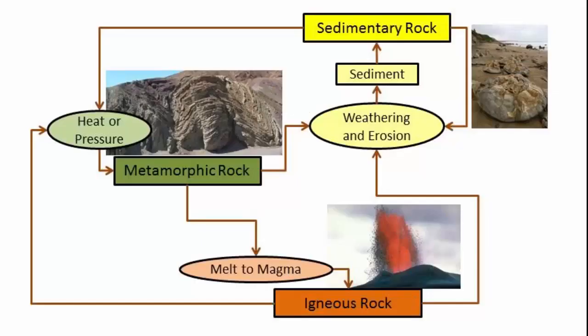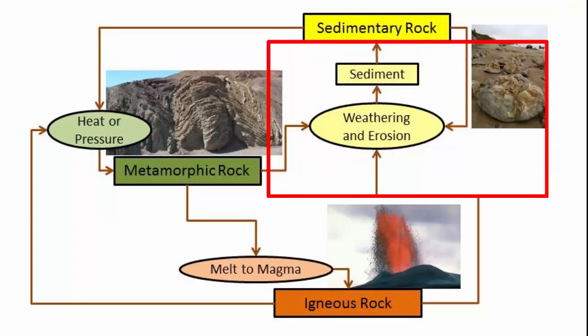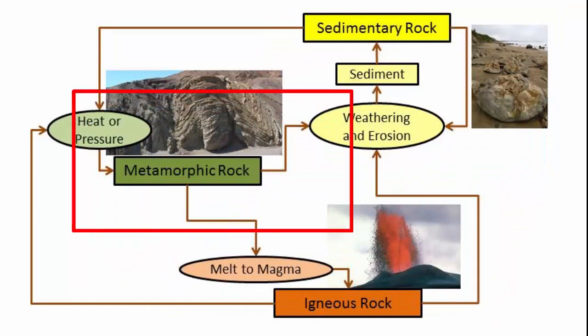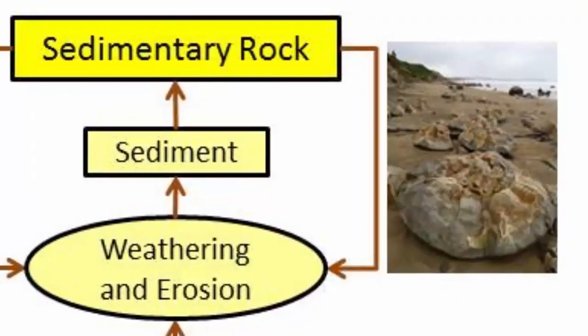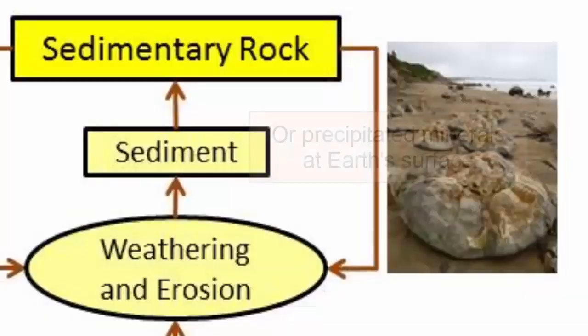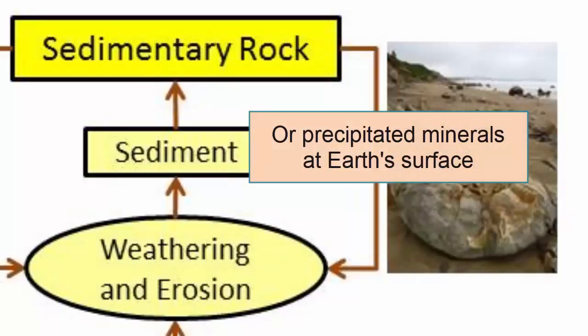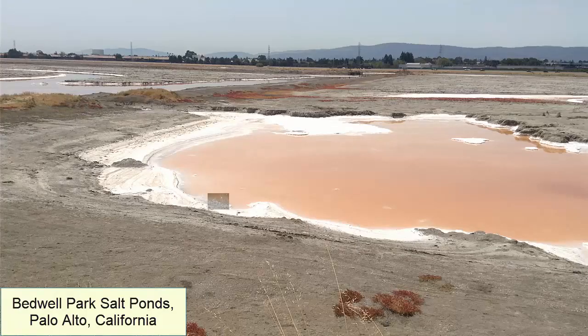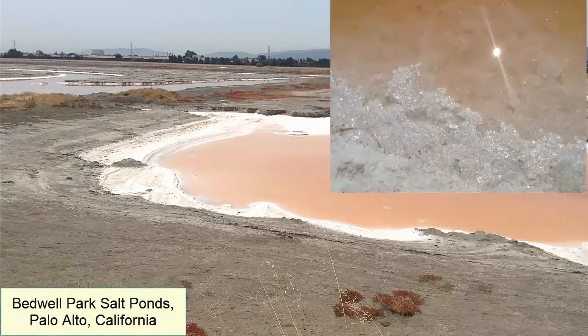All rocks on Earth's surface can be classified as one of three kinds: sedimentary, igneous, or metamorphic. Sedimentary rocks are those formed from the compaction or cementation of debris that is collected in low-lying areas on Earth's surface, like sands buried in sand dunes, or rocks that formed through the precipitation of minerals from fluids at or near Earth's surface, like when seawater evaporates and salt crystals are left behind.